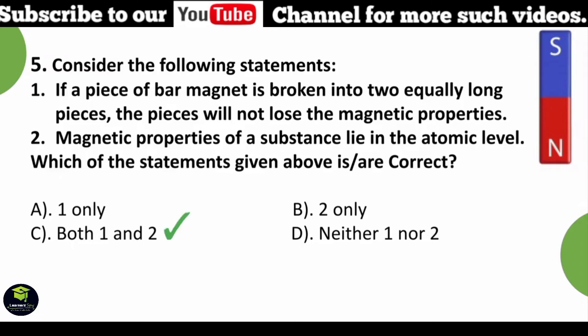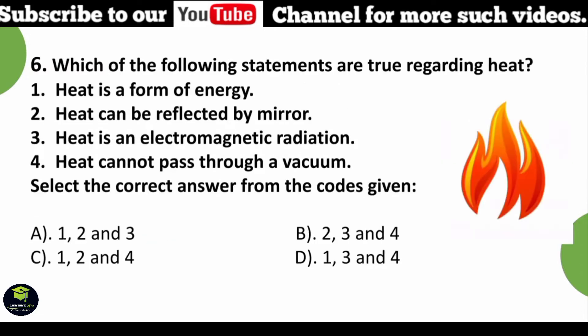Which of the following statements are true regarding heat? First, heat is a form of energy. Second, heat can be reflected by a mirror. Third, heat is an electromagnetic radiation. Fourth, heat cannot pass through a vacuum. Select the correct answer. Answer: One, two, and three.